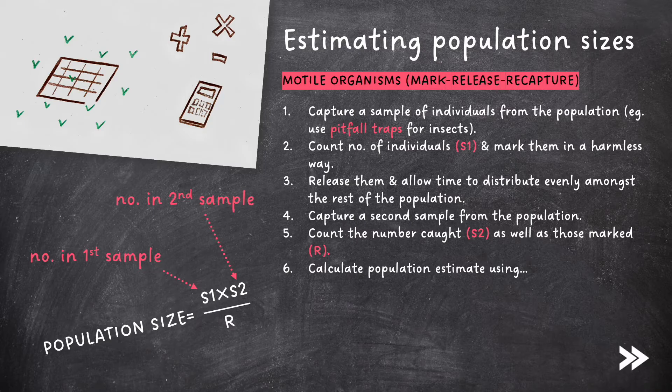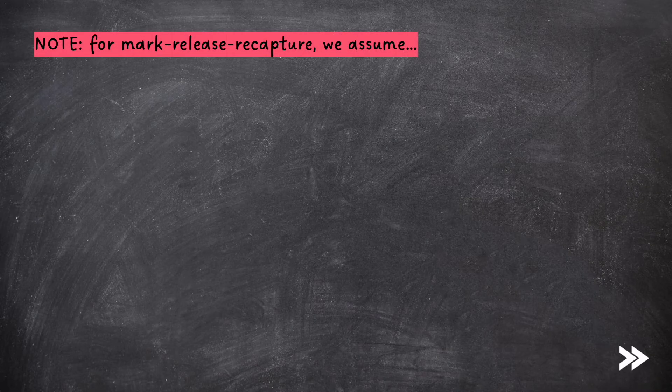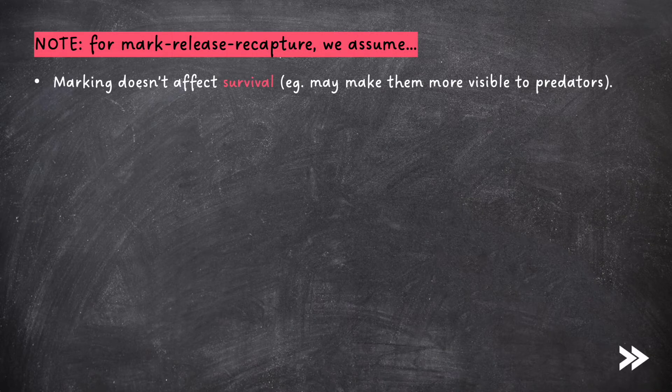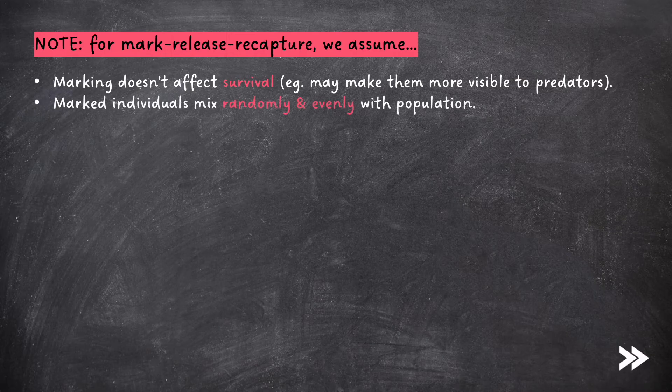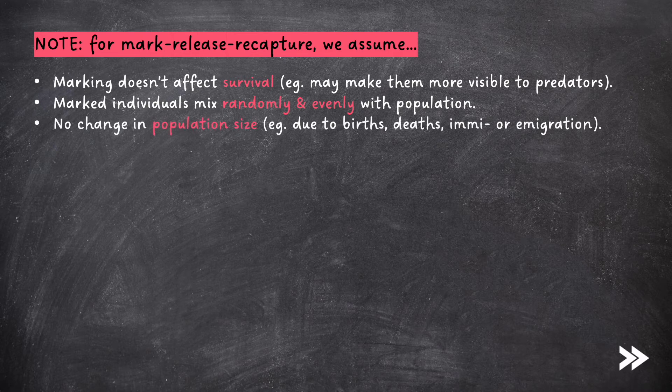For the mark-release-recapture method, we assume the following criteria are met: marking doesn't affect survival, such as making individuals more visible to predators; marked individuals mix randomly and evenly with the population; there is no change in population size due to births, deaths, immigration, or emigration; and the marking is not lost.